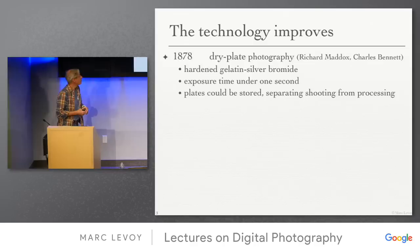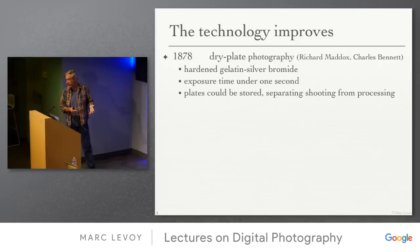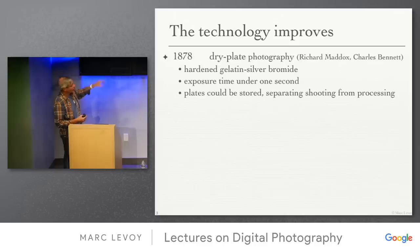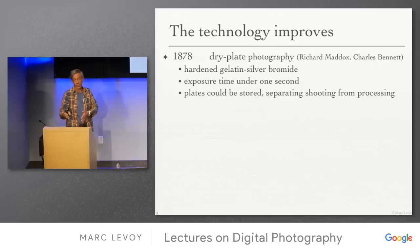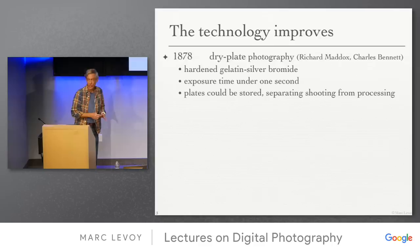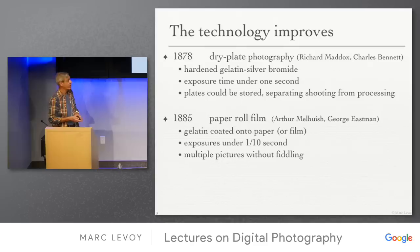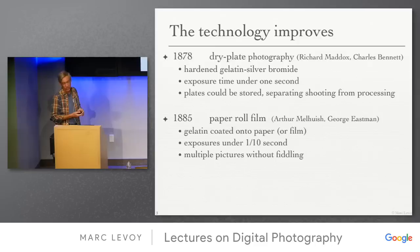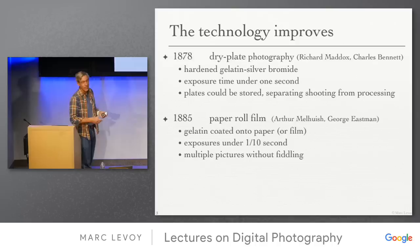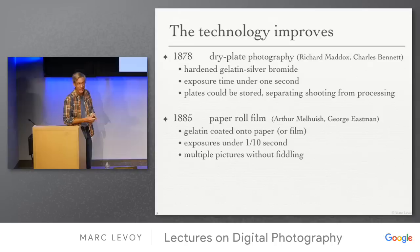Dry plate photography was developed after wet plate photography from the Civil War era. The chemistry is hardened gelatin silver bromide — the key is that exposure time could now be under a second and plates could be stored, separating shooting from processing, so you didn't need to carry a tent. The real advance came with paper roll film: gelatin coated onto paper that could be rolled up, with exposures under a tenth of a second. This meant you needed real shutters since the old method of just covering the lens no longer worked.